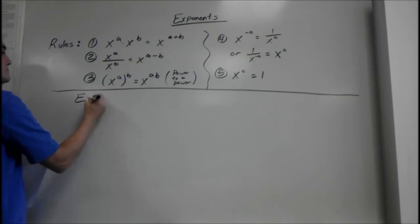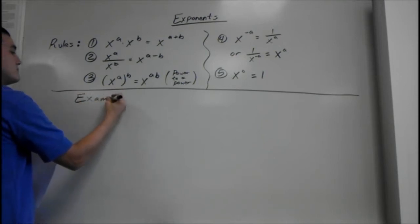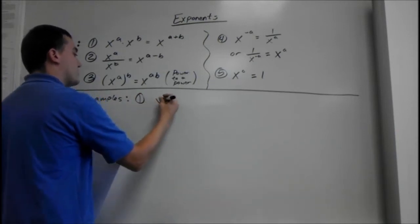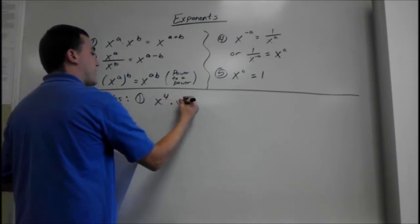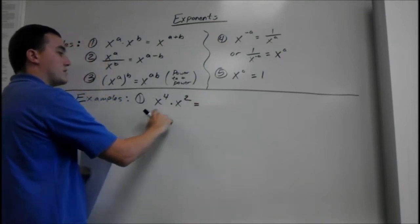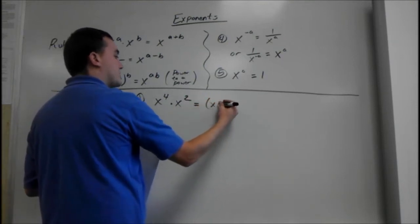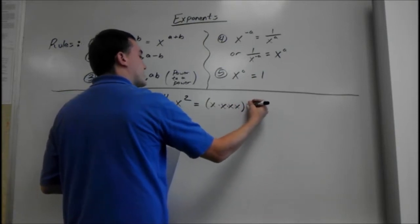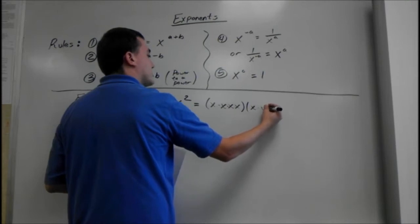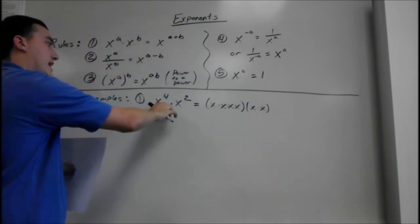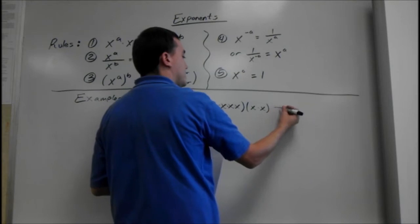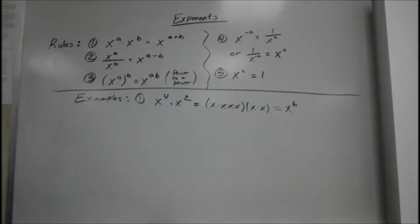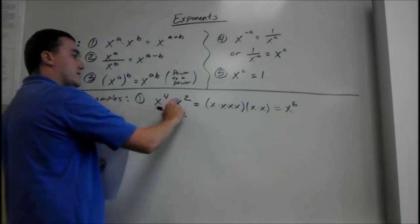First example: say we have x to the fourth times x squared. Really what this means is x to the fourth means x times x times x times x, and then x squared means x times x. There are six of them, so we can just add these numbers and we'd still get the right answer: x to the sixth. That's why we add exponents when we're multiplying.